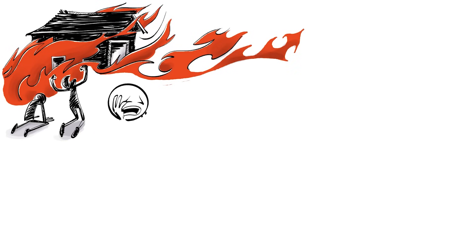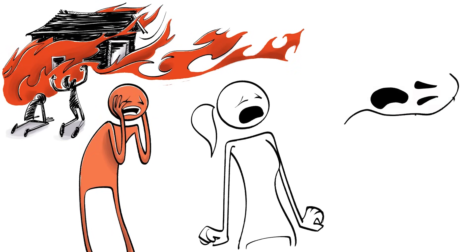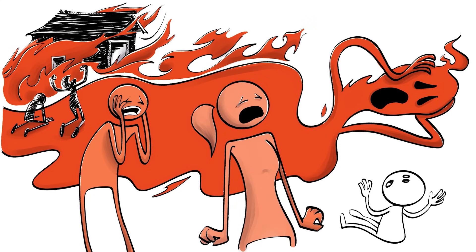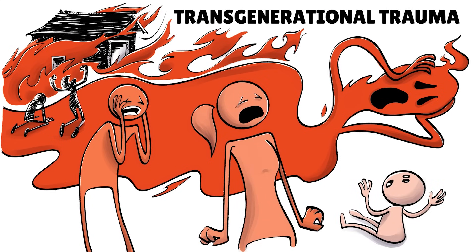When a traumatic experience travels from one generation to the next and affects those who had no direct involvement with the original incident, it's called transgenerational trauma. There are three main theories about how this happens.